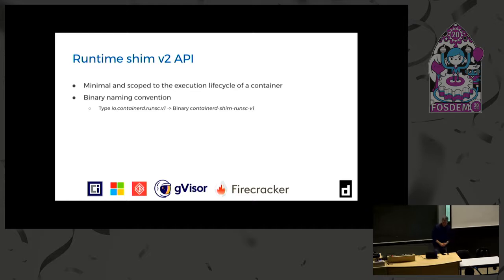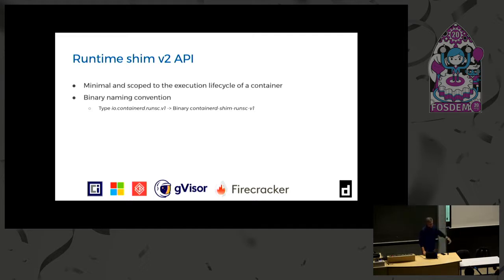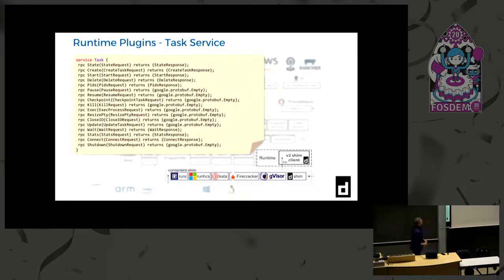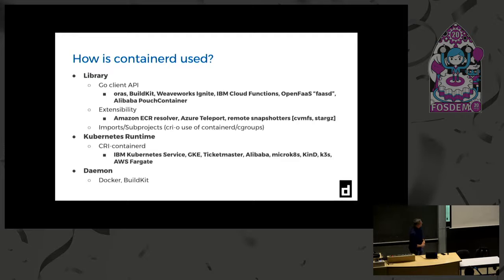What you have to implement is fairly minimal - it's all about the lifecycle of a container. If you want to drive VMs, you just handle start, stop, pause, unpause, all those capabilities in the way your runtime needs, with a simple naming convention. When you start a containerd process, you specify the runtime type. The shim v2 API you need to implement is effectively the task service within containerd. The architecture chart shows where these extensions fit into the plug points.